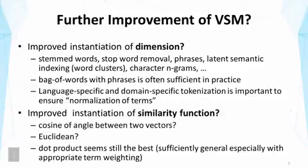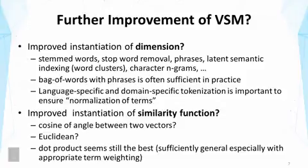I should also mention that sometimes we need to do language-specific and domain-specific tokenization. This is actually very important, as we might have variations of terms that prevent us from matching them with each other even though they mean the same thing. In some languages, like Chinese, there is also the challenge of segmenting text to obtain word boundaries, because the text is just a sequence of characters — a word might correspond to one, two, or even three characters. It's easier in English where we have spaces to separate words, but in some languages we may need natural language processing to find word boundaries.